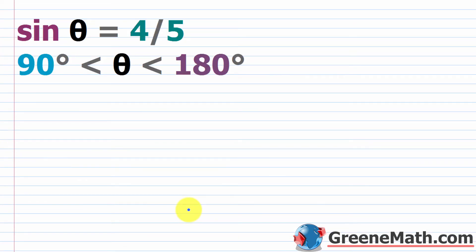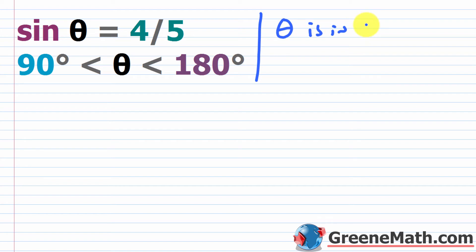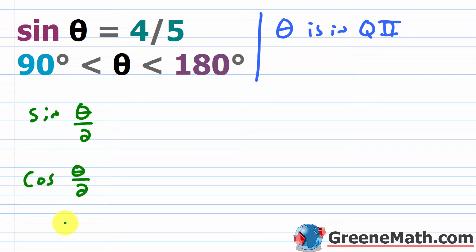Let's look at another common problem type: finding function values of θ/2 given information about θ. We're given that the sine of θ is 4/5, and θ is in quadrant 2 — it's greater than 90 degrees and less than 180 degrees. We want to find the sine of θ/2, the cosine of θ/2, and the tangent of θ/2. Once we have those three, we can get the others using reciprocal identities.